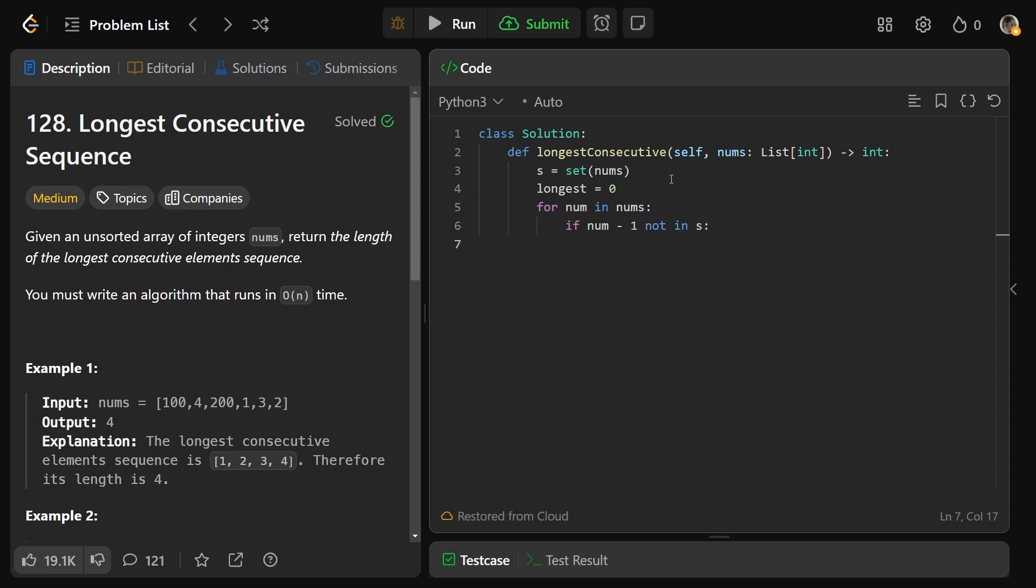If num minus 1 is not in the set, it starts a sequence, so we want to start going up. So the next number that we're looking for is the number plus 1. If we had next num, then the sequence would be length 2, and we could keep bumping this up. So next num is num plus 1, and the current length of our sequence is just 1.